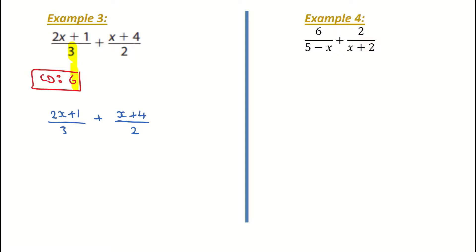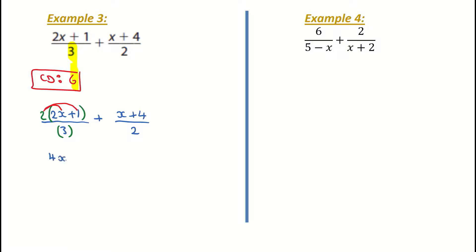I figure out how many times 3 divides into 6 — it divides in 2 times. So I need to multiply my first fraction by 2. I put the numerator and denominator in a bracket and multiply both by 2. Be careful here — you're multiplying the 2 into the full expression: 2 by 2x is 4x, and 2 multiplied by plus 1 is plus 2. That is all over 2 multiplied by 3, which is 6. So 2x plus 1 is equivalent to 4x plus 2 over 6.